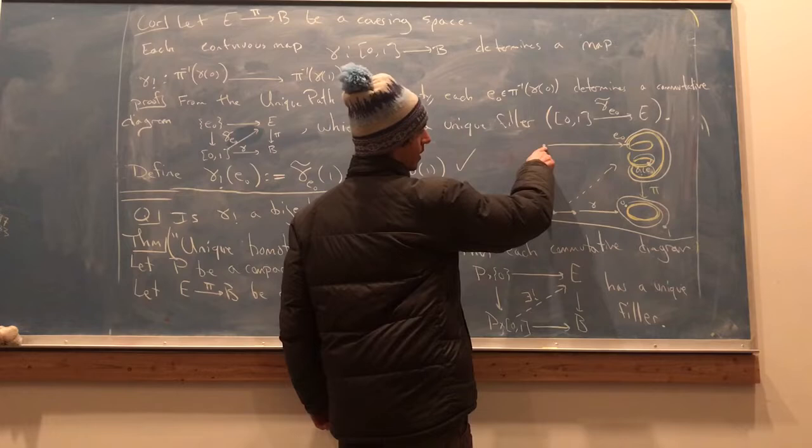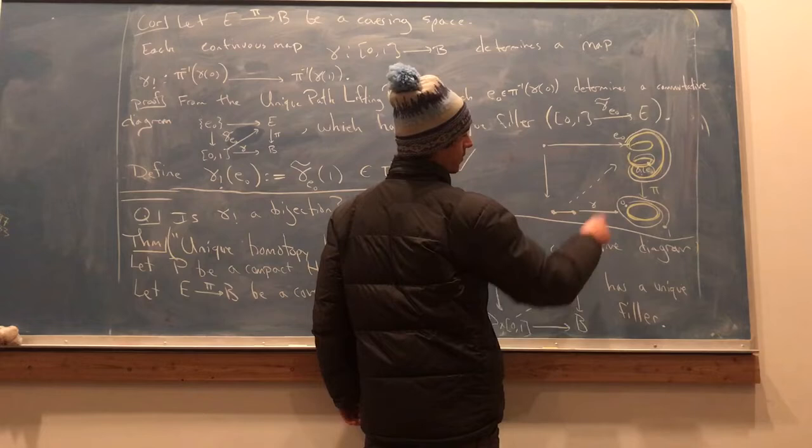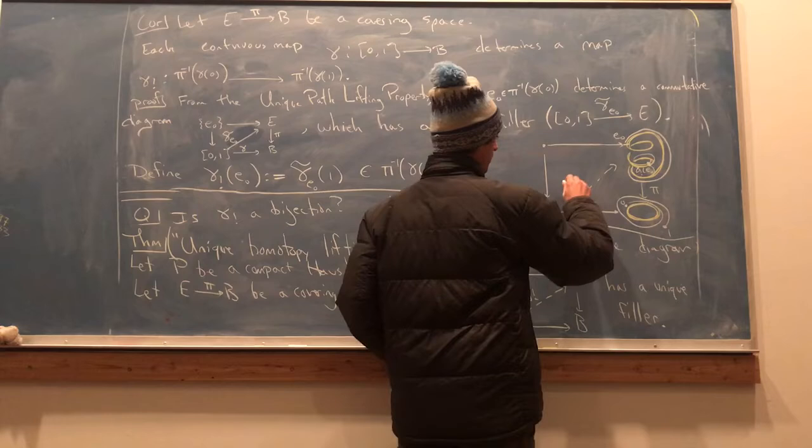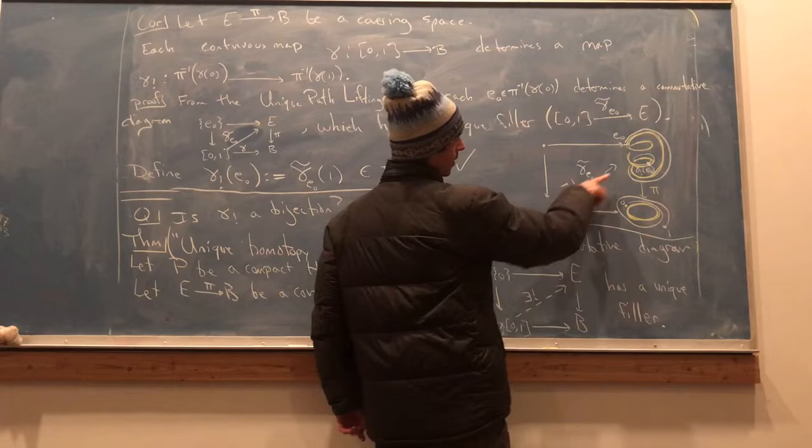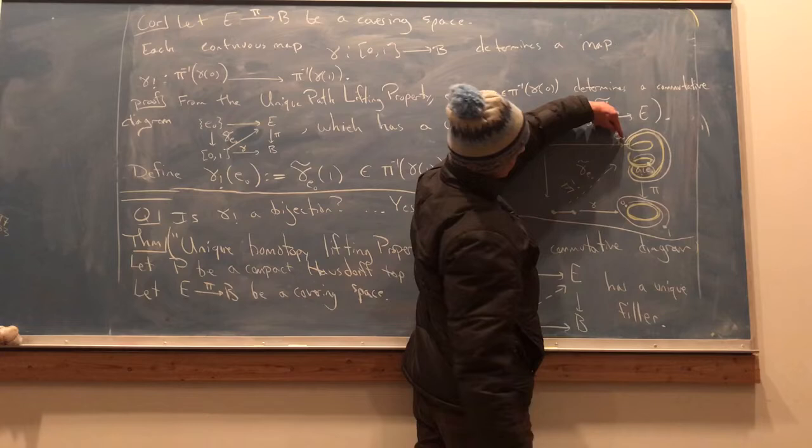So the preimage of the time zero value of the path gamma has three elements in it. If you choose one of those elements, say that one, that determines the solid diagram. And the unique path-lifting property guarantees the existence of a continuous map like this, which is a path upstairs in the total space.